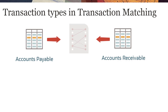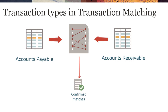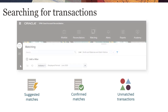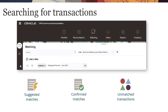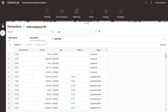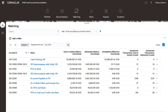After you import transactions and run auto-match, transactions are either confirmed matches, suggested matches, or unmatched. You can search for transactions from the Matching tab or from the Transactions tab under the Matching card. Let's start with the Matching tab to search for matched transactions and adjustments.